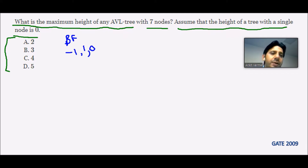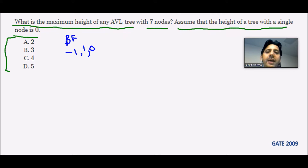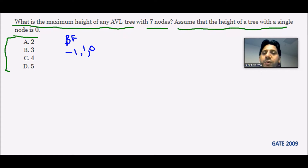If the balancing factor condition is not followed, it is not an AVL tree. To solve this question, we are making an assumption: we will increase the height of the AVL tree to the left hand side, meaning we are inserting nodes to the left hand side. Our goal is to increase the maximum height of the tree and see what the AVL tree will do in that case. Let's suppose we start with a single node A.